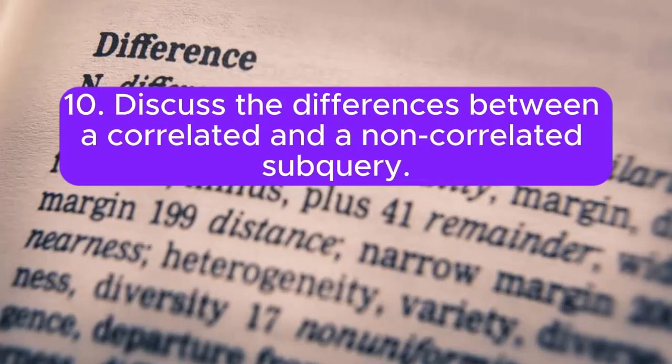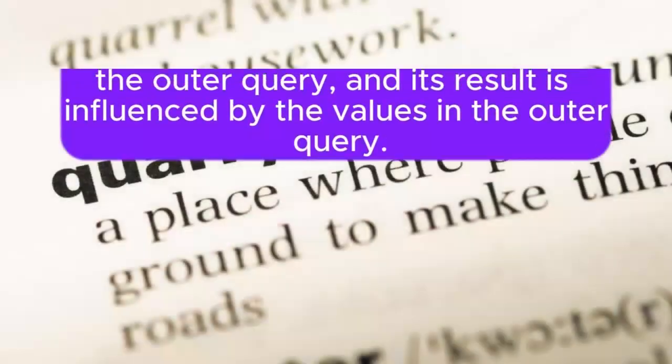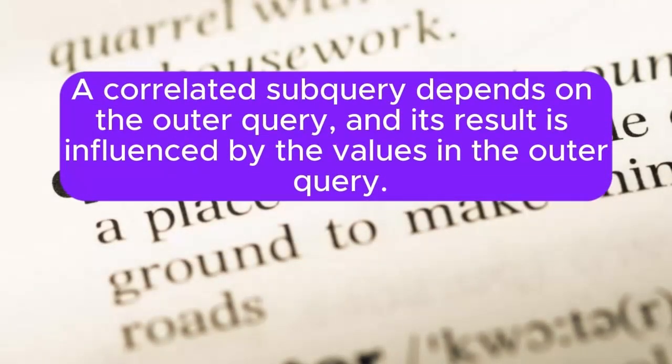Question 10: Discuss the differences between a correlated and a non-correlated subquery. Answer: A non-correlated subquery is independent of the outer query, and can be executed on its own. A correlated subquery depends on the outer query, and its result is influenced by the values in the outer query.